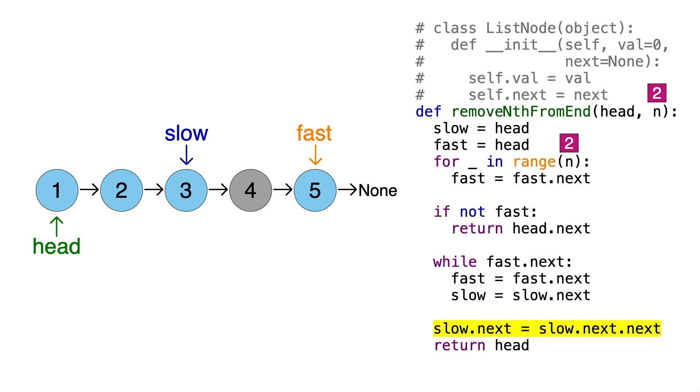Now let's dissect this line here. Slow points to node 3, so slow.next refers to this arrow here, which currently points to node 4. On the other side, we know that slow.next points to node 4, so slow.next.next points to node 5. So this right-hand side will return a reference to node 5. So this line will set slow.next to point to node 5, like this.